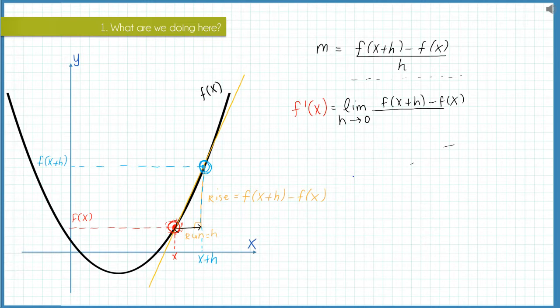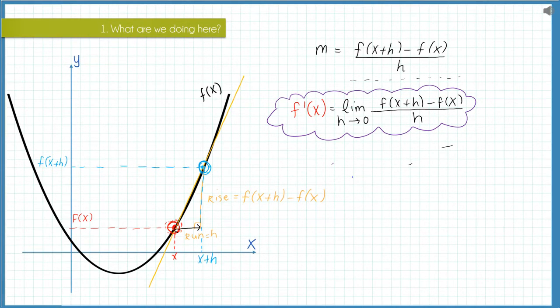So we're taking the limit of the slope expression as the run gets infinitely small and approaches zero. And this is the formula that we use when we differentiate by first principles. So we basically just derived a formula from scratch which will allow us to find the first derivative of a function.